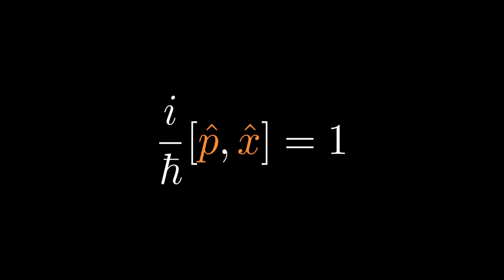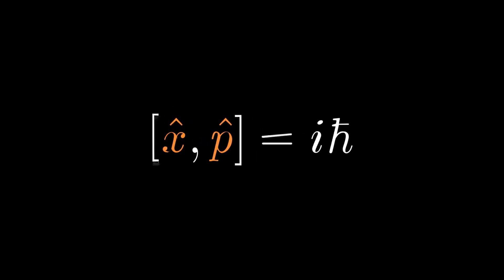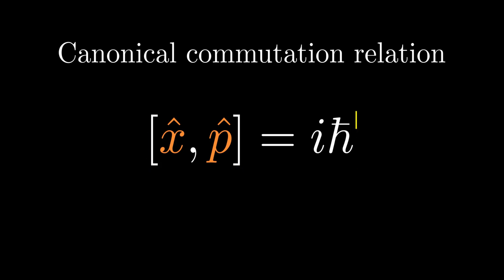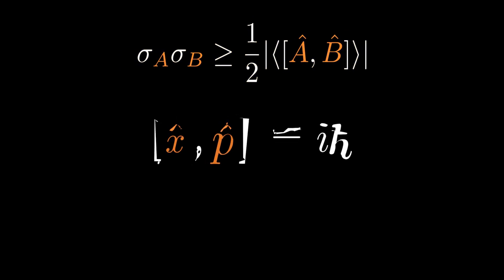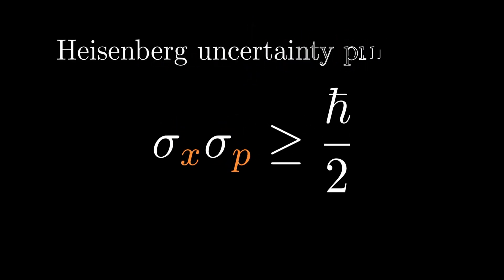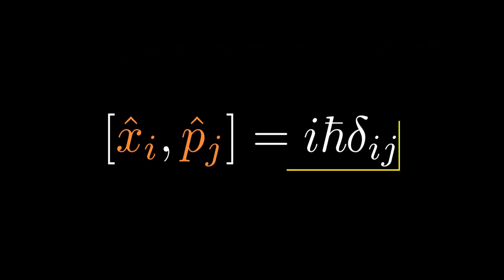Multiplying both sides by i-h-bar and using the negative sign to swap the order of arguments in the commutator yields the canonical commutation relation. We have seen at the end of the last chapter that the Heisenberg uncertainty principle is a direct consequence of this commutator. We can use the fact that operators acting in different degrees of freedom commute to generalize this result to three dimensions. It is left as an exercise to derive this commutation relation in 3D by considering translation in 3D space.